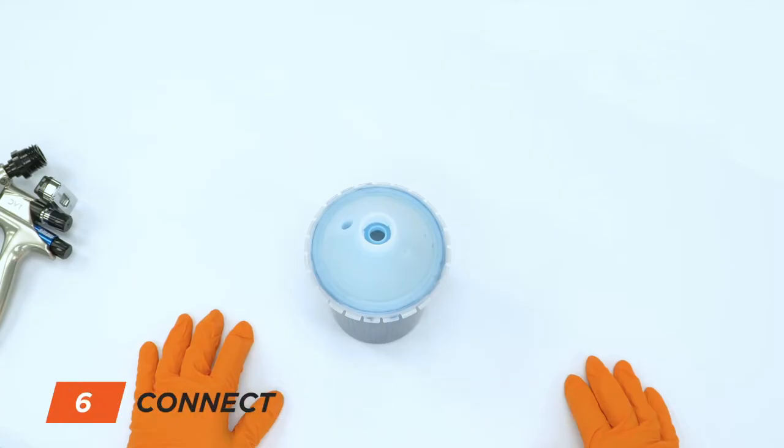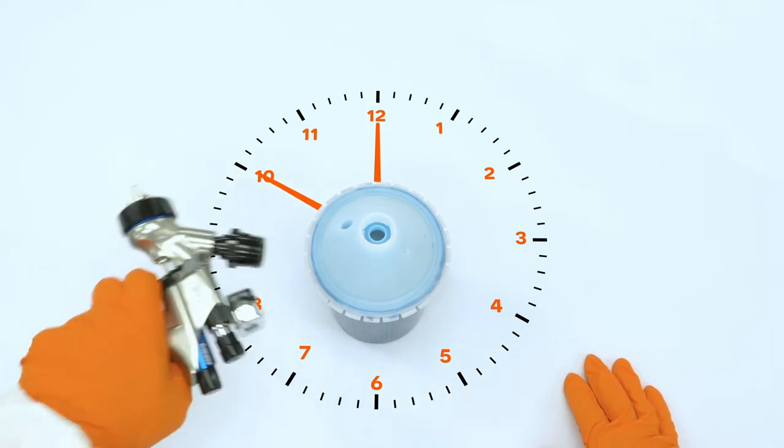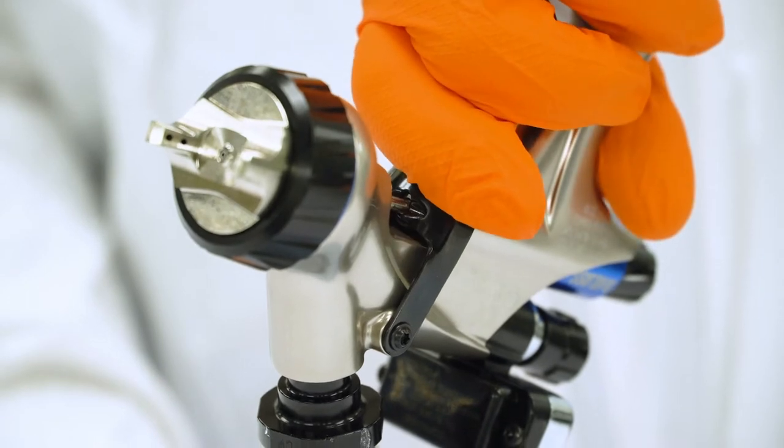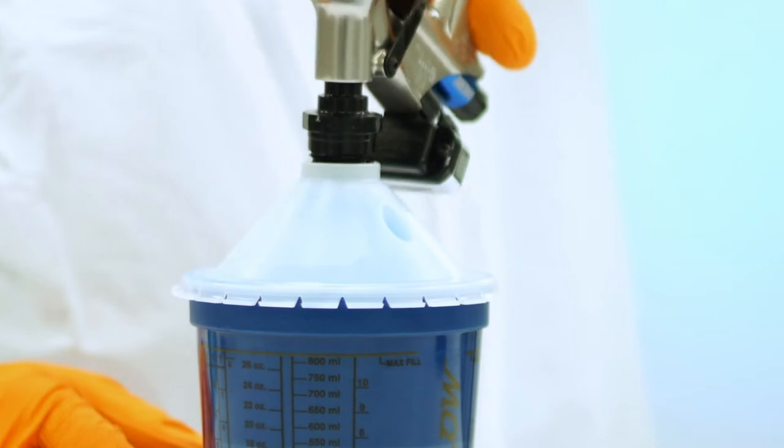To attach the spray gun, first find the large indentation on the cup lid. Position the unit so the indentation is at 10 o'clock. Invert your spray gun with the adapter already attached. Pull the gun trigger. Align the air cap of the spray gun so it's pointing toward 12 o'clock.